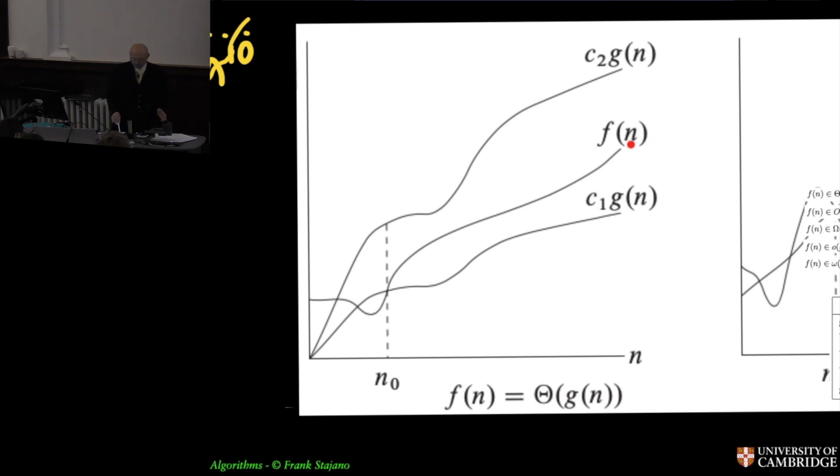Then the order of growth of f of n is the same as g of n and I say f of n is equal big theta of g of n. And really big theta of g of n is a set of functions that all comply with staying within two versions of g of n multiplied by different factors. And so it should really be not an equal sign but an set in sign.